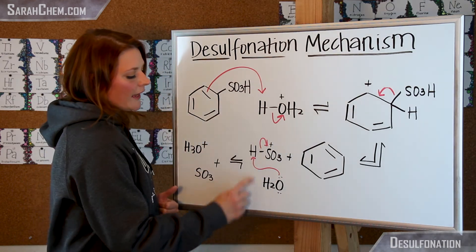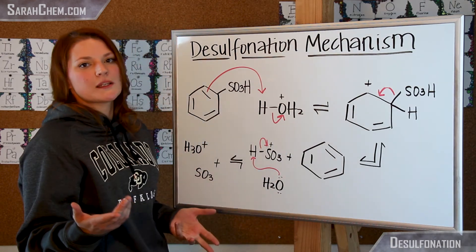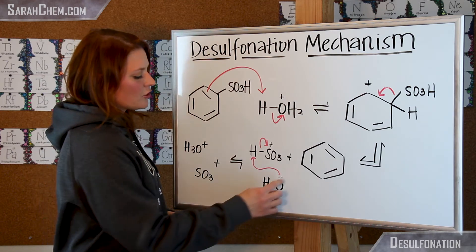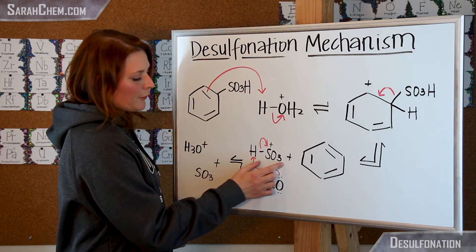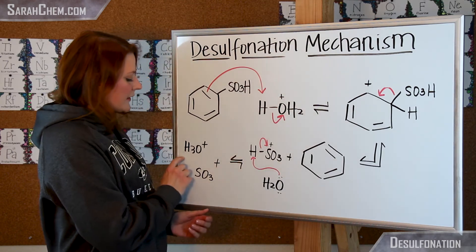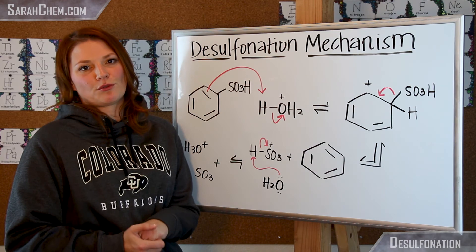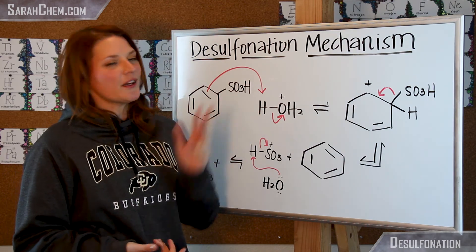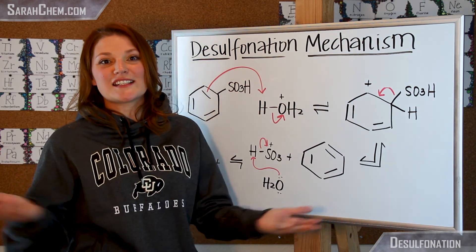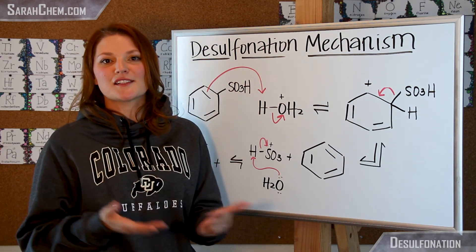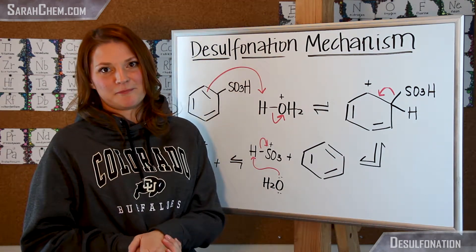Now we can have water or some other base in solution come and deprotonate this group such that we have our acid reform and then we form SO3. So this is pretty much how you're going to desulfonate a benzene sulfonic acid.